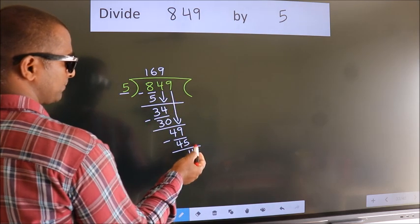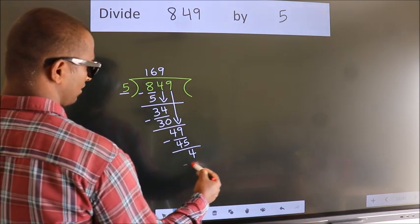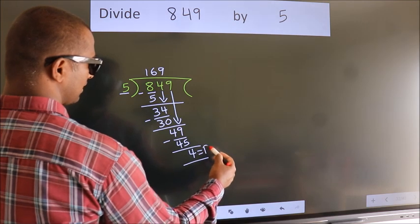No more numbers to bring down. So we stop here. This is our remainder. This is our quotient.